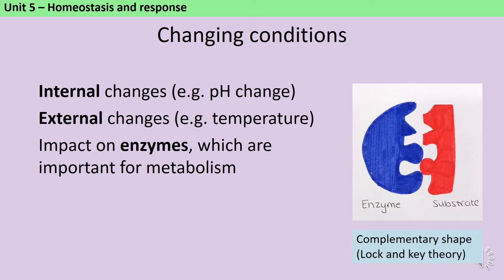As cells or organisms move through their environment they are subjected to various changes. This could be internal changes within the cell because of the chemical reactions going on, or external changes like the weather becoming warmer. In order to maintain good health it's important that the cell can moderate those changes so that the conditions inside the cell remain more or less constant. This is because our metabolism, or those chemical reactions happening within a cell, is controlled by enzymes. Enzymes have a highly specific shape and if they're exposed to conditions that are too variable, like a temperature that gets too high or a pH that gets too low, then they may be denatured.